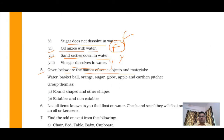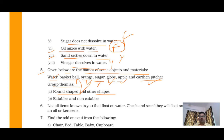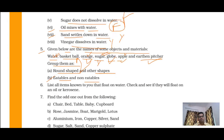Question number five: given the objects — water, basketball, orange, sugar, globe, apple, and earthen pitcher — group them as round shaped and other shapes. Round shaped: basketball, orange, globe, apple, and earthen pitcher. Other shapes: water and sugar. Then group as eatables and non-eatables. Eatables: water, orange, sugar, apple. Non-eatables: the rest of them.